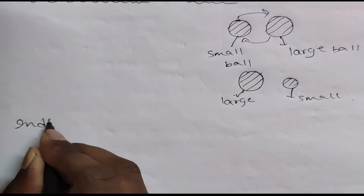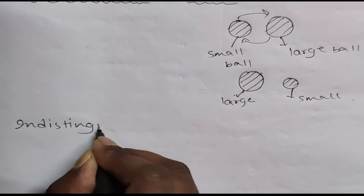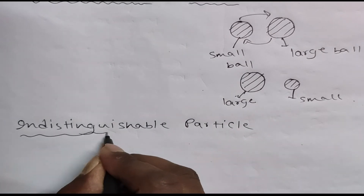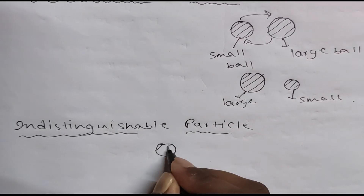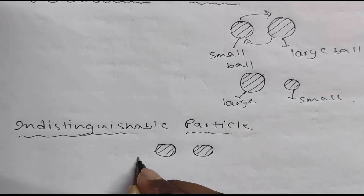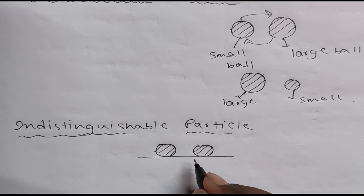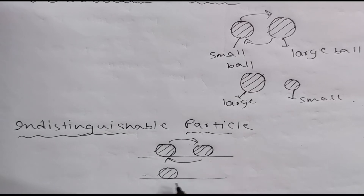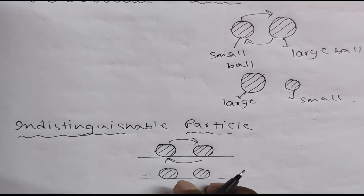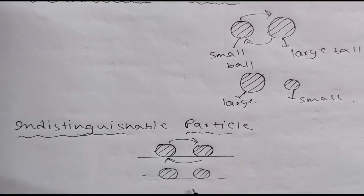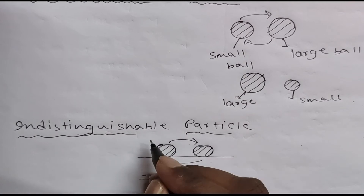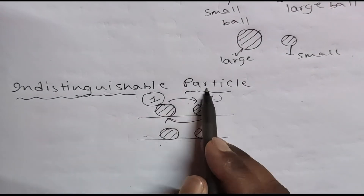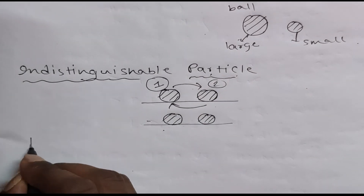What is an indistinguishable particle? Suppose there are two balls of equal size, shape, and mass. After interchanging their positions, we could not define the difference between these balls — which is number one and which is number two. This type of particle is also known as an indistinguishable particle.